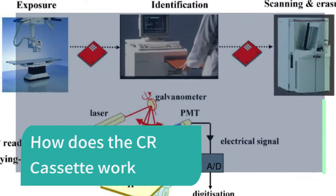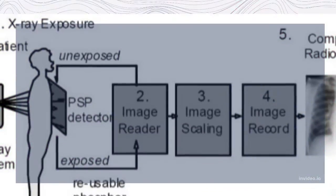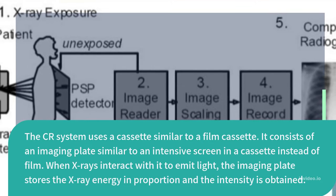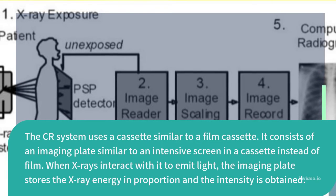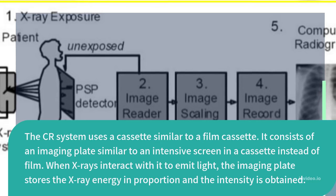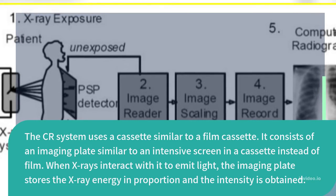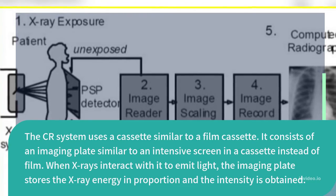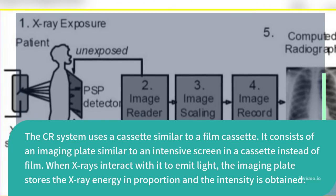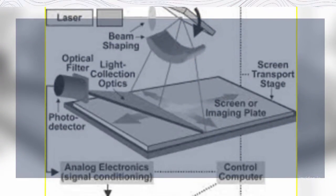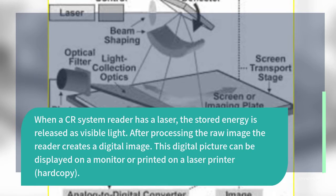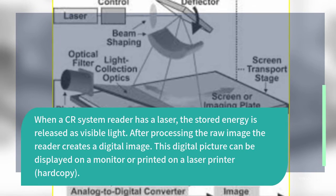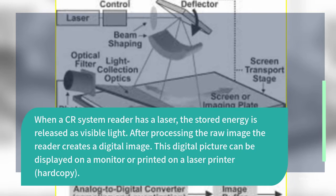How does the CR cassette work? The CR system uses a cassette similar to a film cassette. It consists of an imaging plate similar to an intensifying screen in a cassette instead of film. When X-rays interact with it, the imaging plate stores the X-ray energy in proportion and the intensity is obtained. When a CR system reader uses a laser, the stored energy is released as visible light, and after processing the raw image, the reader creates a digital image.